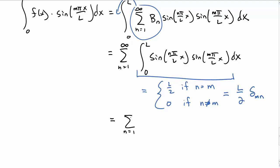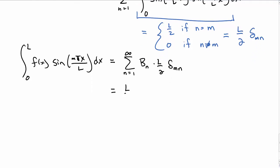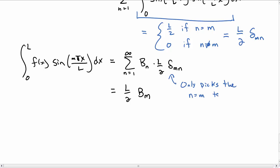Okay, so now let's put that result in here. So we have the sum n equal to 1 to infinity, the b sub n, times L over 2 delta of mn. And on the left-hand side, we still have this integral of f of x sine of m pi x over L dx. Well, this infinite sum collapses down to just one term because, well, that's what the Kronecker delta is doing for you. It only picks out the term where n is equal to m in this infinite sum.